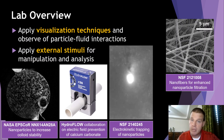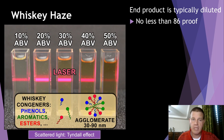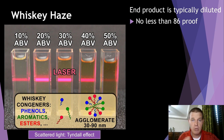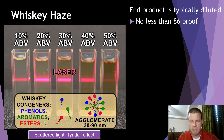Today I'm going to talk about bourbon whiskey, and the first thing is whiskey haze. When you have bourbon and you dilute it, you typically dilute it down from barrel proof so you can sell more product. You don't want to go below 86 proof — at least that's a general marker; most are 90, 91, or 92 proof. But when you do dilute it, it can get hazy.